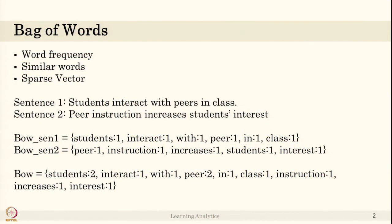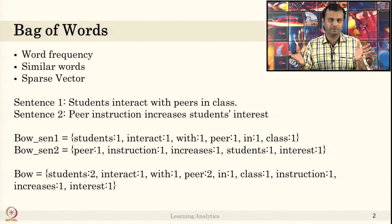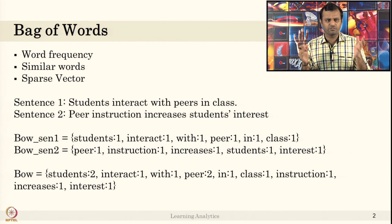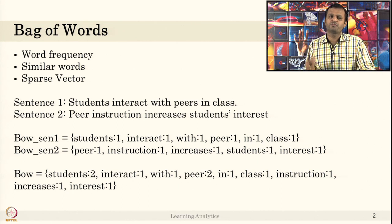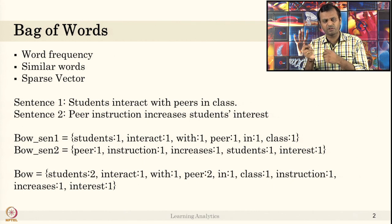In this video, we will talk about bag of words and how we can use that to create automatic grading of essays. Bag of words is simple — it picks the frequency of words occurring in sentences, counting how many times each word occurs. This can also be used to find similar words, which is useful because some students might write with wrong spelling. The result is a sparse vector.